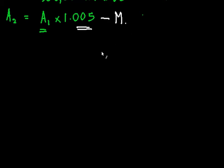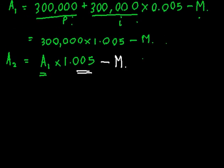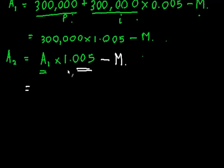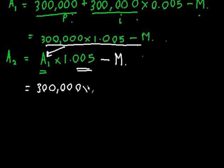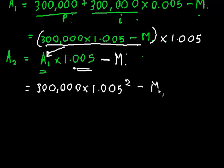So if I substitute this into here, what I'm going to end up getting is 300,000 times 1.005 squared. Because remember, I'm multiplying this entire thing by 1.005, that's what's happening over here. So what's happening is minus even the M has to be multiplied by 1.005 minus this M.